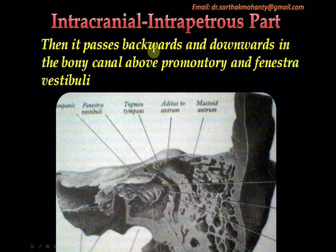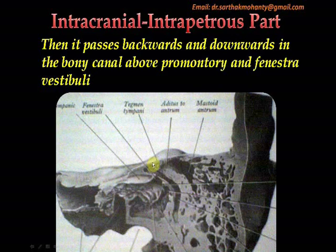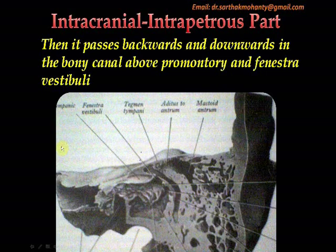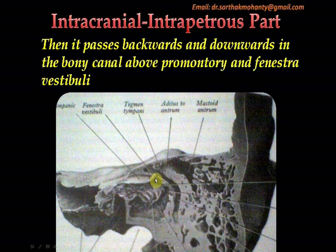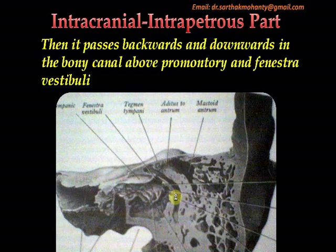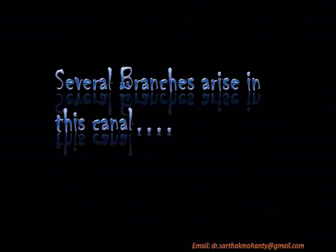The nerve then passes backwards and downwards in the bony canal, above the promontory and fenestra vestibuli. Here it enters the facial canal and passes downwards and backwards — this is the forward direction and this the backward direction — lying above the fenestra vestibuli and the promontory. Several branches arise in this canal, which we will show one by one.